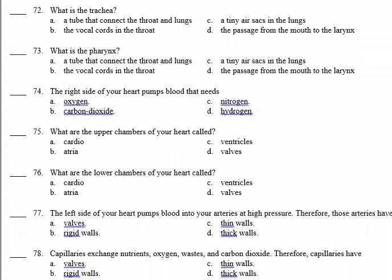Number 72: what is the trachea? The trachea is a tube that connects the throat and the lungs. You can feel the trachea at the front of your neck — it has rings keeping it open at all times. So number 72, the answer is A: a tube that connects the throat and the lungs.